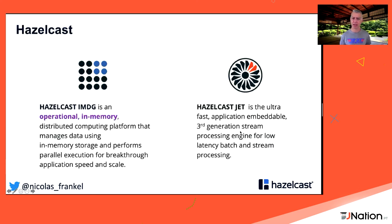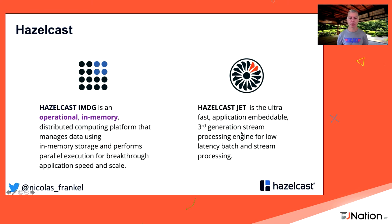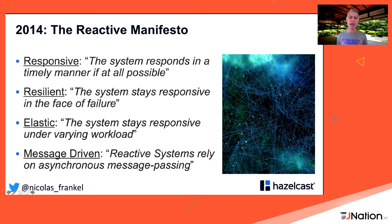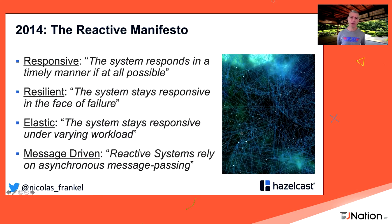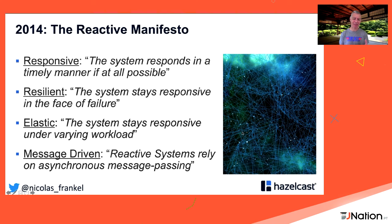I work for a company called Hazelcast. We have two products: the first is an in-memory data grid — instead of having a map inside a single JVM you can shard and replicate it across several JVMs. The other is an in-memory stream processing engine. But I won't talk about either of them today. This talk is about migrating from imperative to reactive.